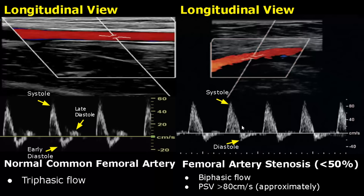No forward flow in diastole is seen. Also, the peak systolic velocity is increased — it is more than 80 centimeters per second here.